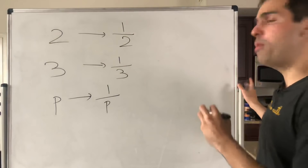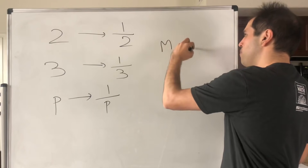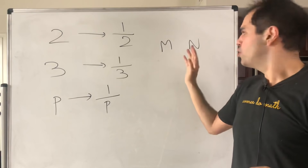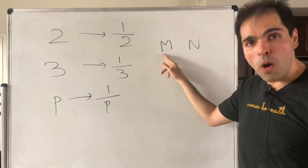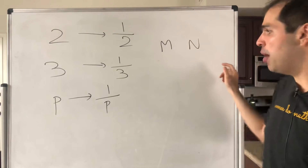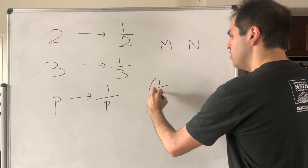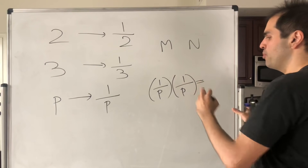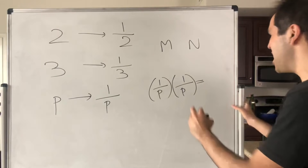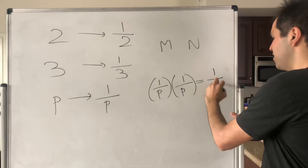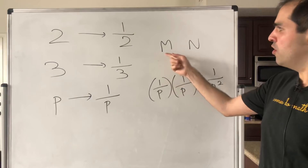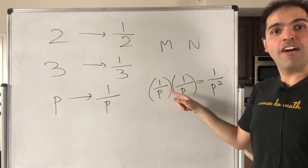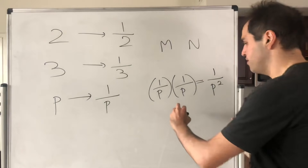And now, if we pick two positive integers at random, it is a pretty independent choice. So the chances that both of them have a factor of p in common is one over p for the first number times one over p for the second number, which is one over p squared. In particular, the chances of m and n not having a factor of p in common is one minus one over p squared.